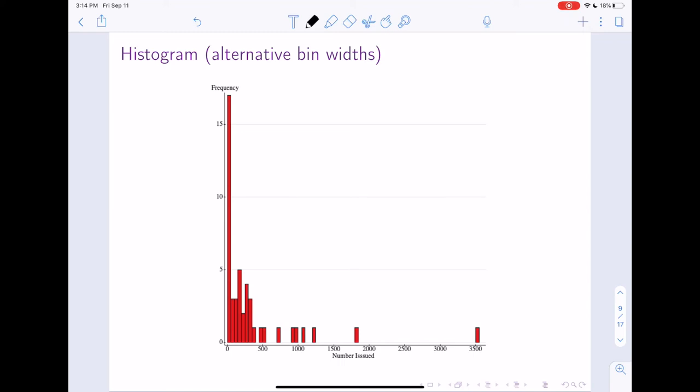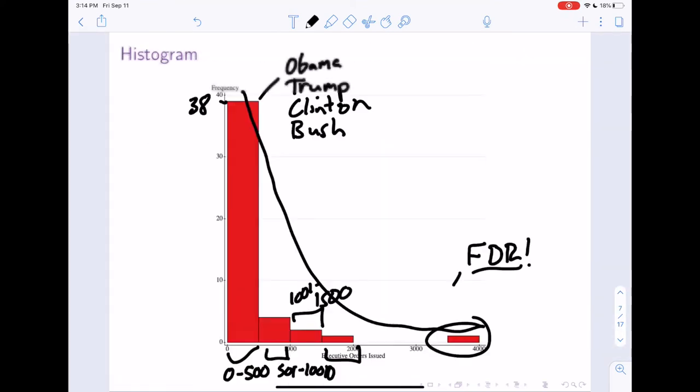And here I've created much smaller bins. I think what I did when I did this was 50. So now each of these little bars corresponds to a width of 50, whereas before here, oops, these correspond to a width of 500.